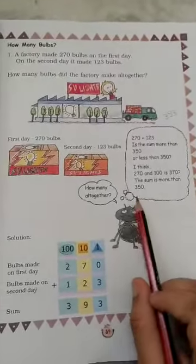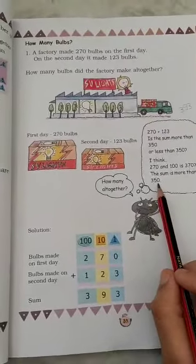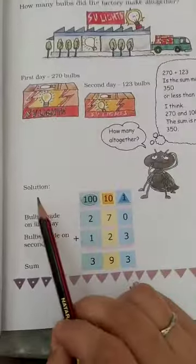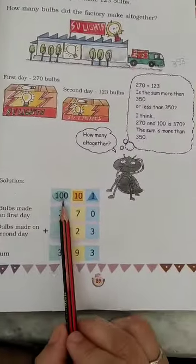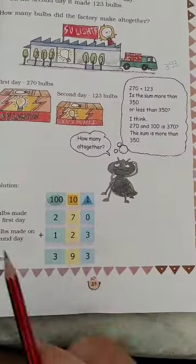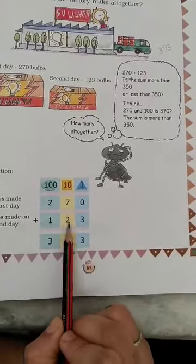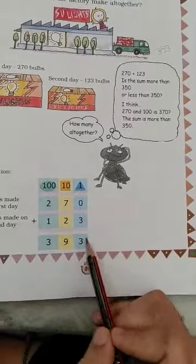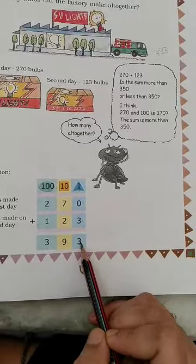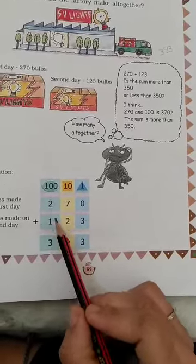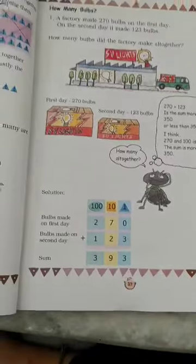We have made a solution. 100, 10 and 1. We put 100 in 100. 2, 7, 0, 1, 2, 3. We add this way. 3 plus 0 is 3, 7 plus 2 is 9, 2 plus 1 is 3. So 393.